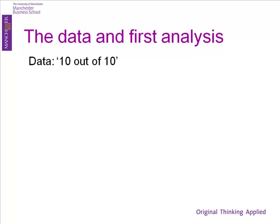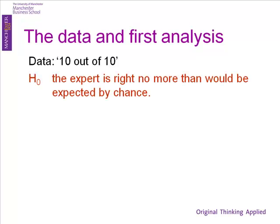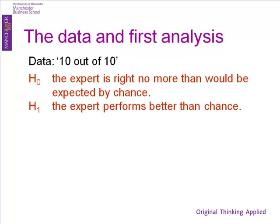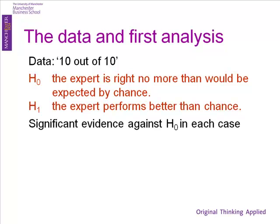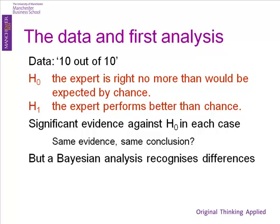In all cases, the data is ten out of ten. If you're a good statistician, you write down a null hypothesis: the expert — be it a tea lady, a music expert, or a drunk — is right no more than would be expected by chance. The alternative is better than chance. In every case, you've got a half to the tenth, which is one over about 1,024 — well below 0.01, so it's highly significant evidence. Everybody, in all these cases, the stats say things are better than chance. Can you believe it? Same evidence, same conclusion.